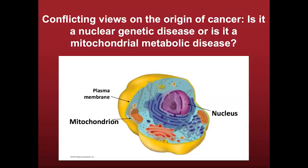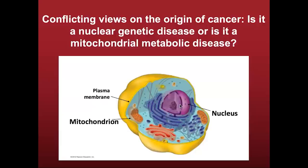What's shown here is a cartoon of a cell pointing out two critical organelles: the mitochondrion and the nucleus. I will be presenting evidence that it is the mitochondrial damage to oxidative phosphorylation that ultimately leads to the mutations in the nucleus, and that the mutations in the nucleus arise as downstream epiphenomena of the damage to the mitochondria — the origin of cellular energy in the cell. These bean-shaped organelles are the mitochondria, and the cristae inside are responsible for the generation of energy through oxidative phosphorylation.